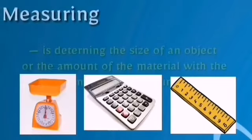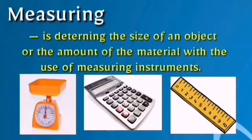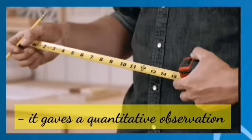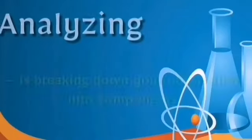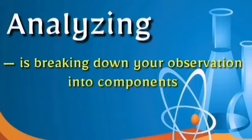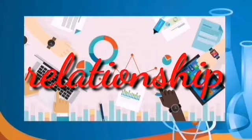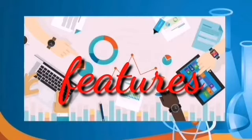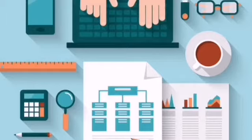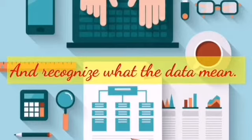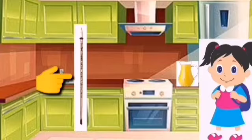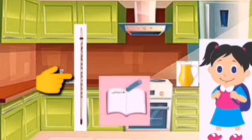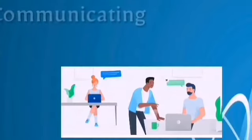Measuring is determining the size of an object or the amount of a material with the use of measuring instruments. Measuring gives a quantitative observation. Analyzing is breaking down your observations into their components and seeing the relationships among them. When you analyze, you look into the details to discover essential features. You have to look for patterns in the data and recognize what the data mean. For example, if you used a thermometer to record the temperature of a cold pitcher of juice on the table every minute, you would notice a pattern of increasing temperature.